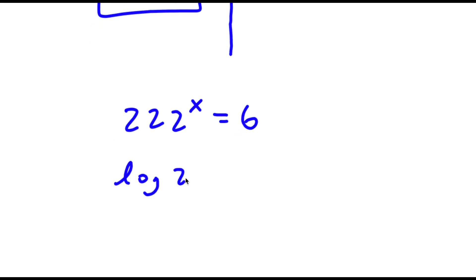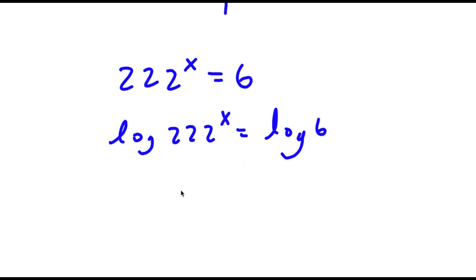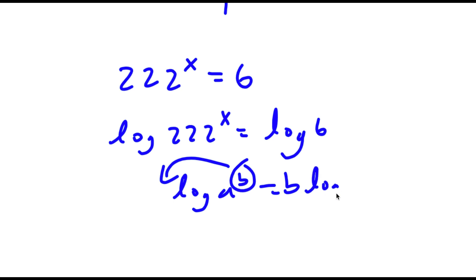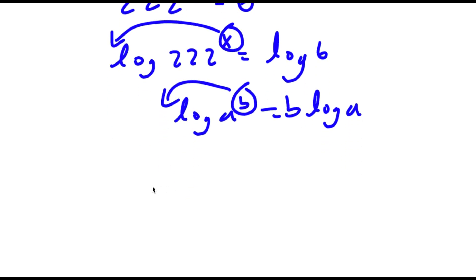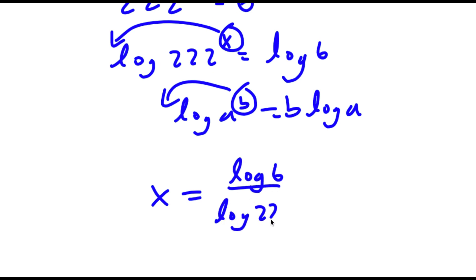If I take the log on both sides, using the rule that log of a to the power of b equals b times log a, I can move x to the front. So I get x is equal to log 6 over log 222.